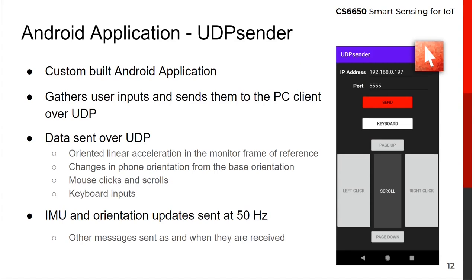To send various user inputs — clicks, scrolls, keyboard inputs, and most importantly acceleration and orientation information — from the smartphone to the PC client, an Android application was built in Java using Android Studio. It has a functional layout designed to behave as much as a conventional mouse, with haptic feedback provided whenever buttons are clicked and when initial calibration is complete. The IMU and orientation data are streamed at 50 Hz over UDP to the PC client.